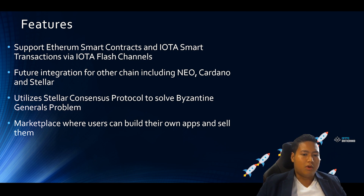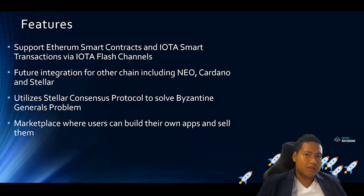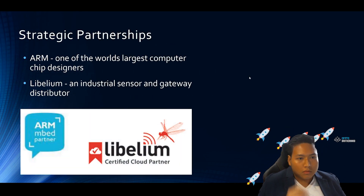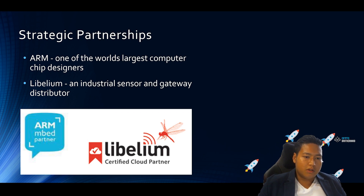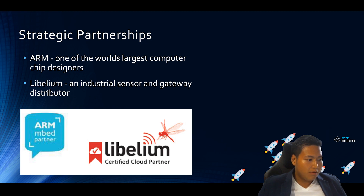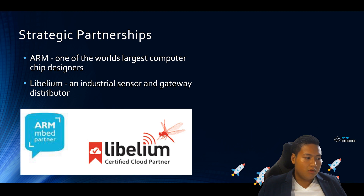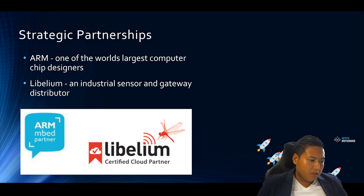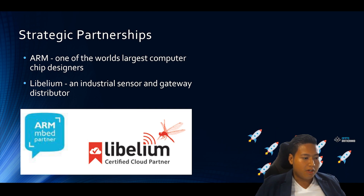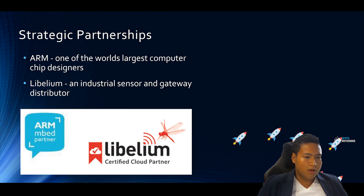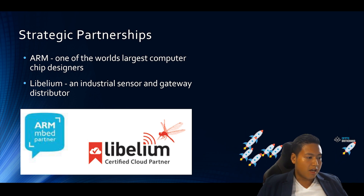Sparkster will also be building a marketplace where users can build their own apps and sell them — so if you want to make the next big Angry Birds, you can try it with Sparkster. They already have two strategic partnerships: ARM, one of the world's largest computer chip designers, and Libelium, an industrial sensor and gateway distributor. For ARM, they have developed the ability to build IoT devices without writing any code — for example, a device that detects temperature in a greenhouse and turns on a warning LED if temperature rises or falls outside normal range, and uses a relay to open or close a window. For Libelium, they have built gateway software that facilitates when and what data should be sent to the platform, which can then be used by other applications.